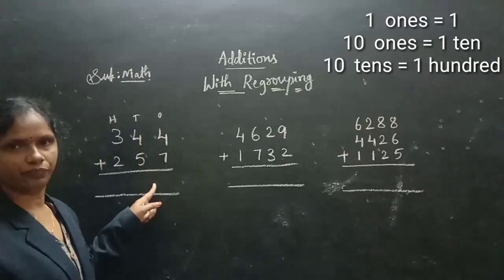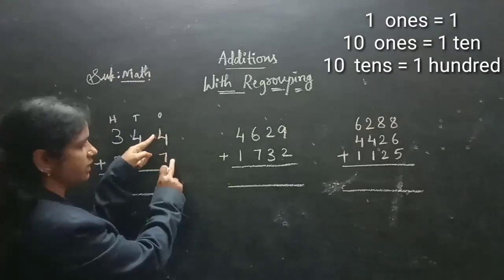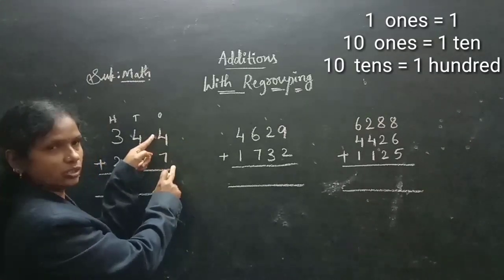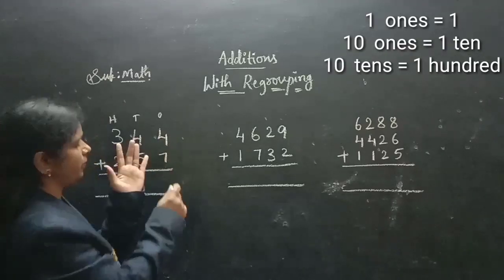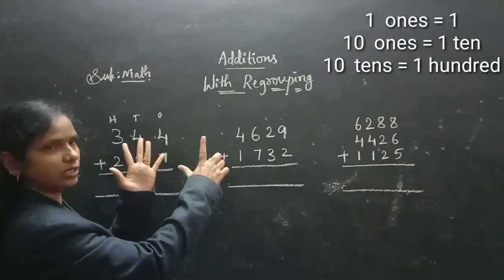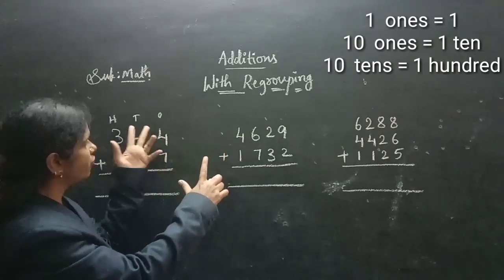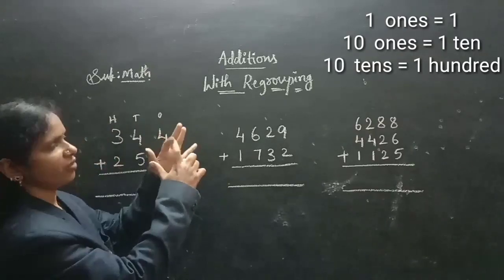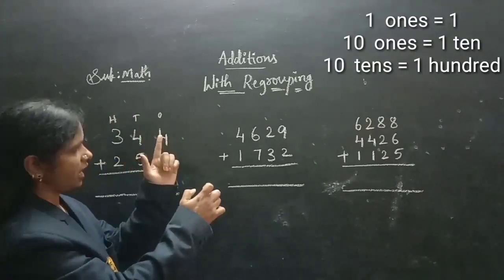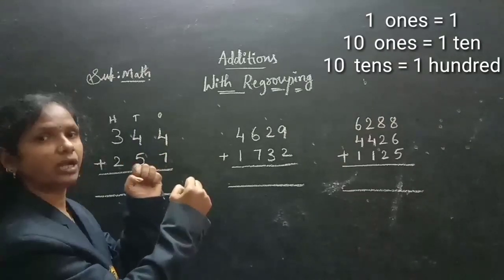Let's add the 1's column. First 4 we have children and next 7 we have. So, 4 after we are taking 7. First you open 7 fingers — that is the second number. Here I open 7 fingers. Now, 4 after 7 we need to add. So, 4 after means 5, 6, 7, 8, 9, 10, 11. 4 after 7 is nothing but 11 children.